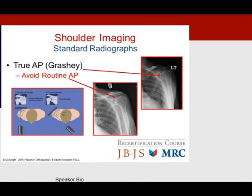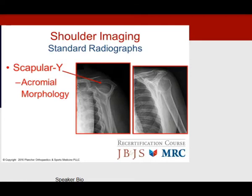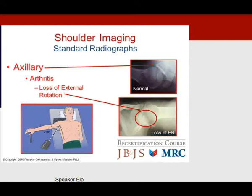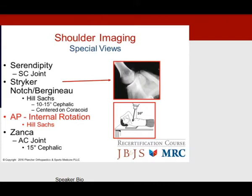X-ray technologists can help you. Always avoid the routine AP view; instead, get the true AP or Grashey view so you're not misled into thinking there's glenohumeral arthritis when the joint is actually open. A scapula Y view is important to detect acromial morphology for type 1, 2, and 3. An axillary view is essential to detect, for example, bone-on-bone relationships; abducting the arm and having the patient hold an IV pole can facilitate obtaining it.